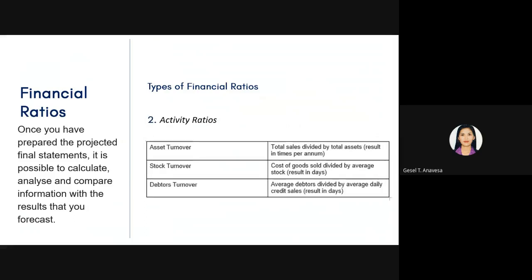The second type of financial ratio is the activity ratio, which demonstrates the company's efficiency in operations. It shows how well the company uses its resources, such as assets, to generate sales. Examples of activity ratios include the asset turnover, stock turnover, and debtor's turnover.